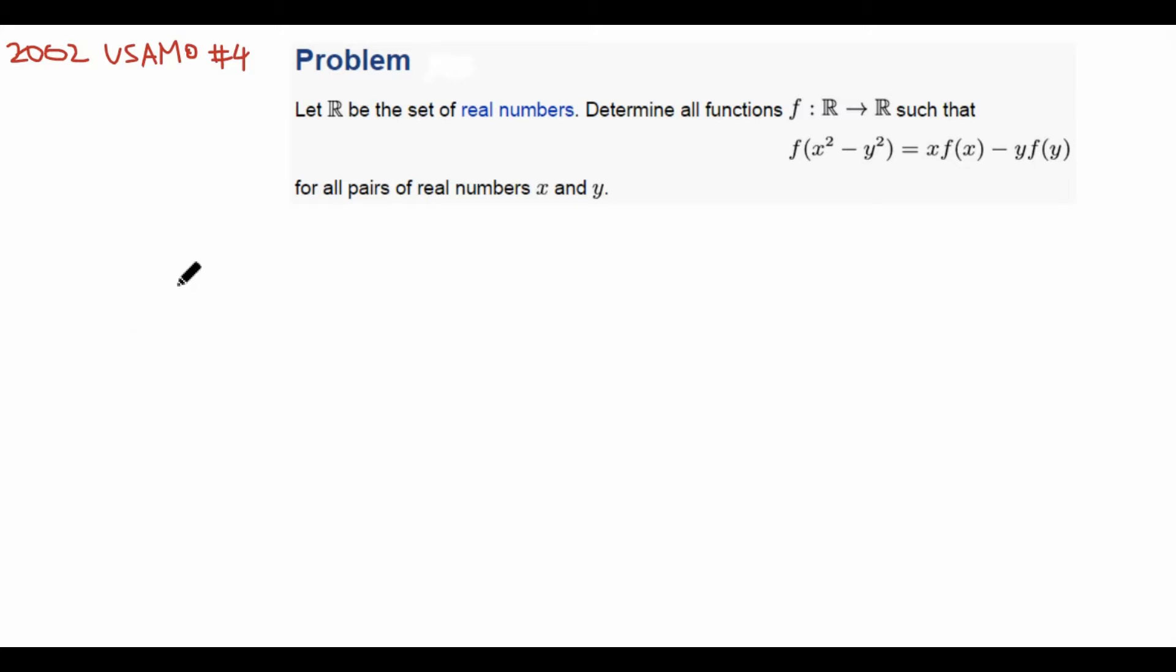So let's get started by reading the problem. Let R be the set of real numbers. Determine all functions f from R to R such that f(x² - y²) = xf(x) - yf(y) for all pairs of real numbers x and y.